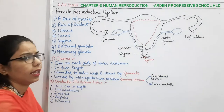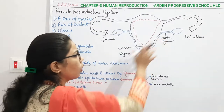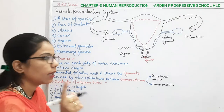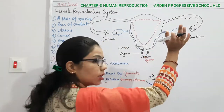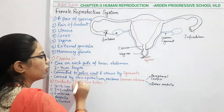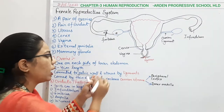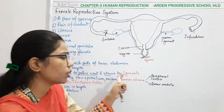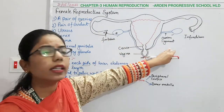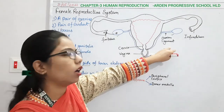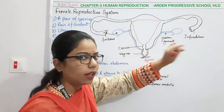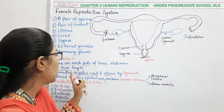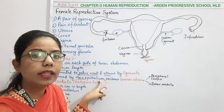The length of the ovary is 2 to 4 cm, and it is connected to the pelvic wall as well as the uterus. The structures responsible for this connection are known as ligaments — here called the ovarian ligament. The ovary is also surrounded by some epithelium.